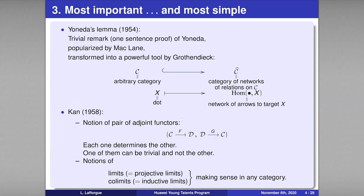The first important thing to say about categories is that in category theory, the most important things are the most simple things. There is the so-called Yoneda lemma, introduced ten years after the invention of categories — just a remark with a one-sentence proof by the Japanese mathematician Yoneda. This remark was popularized by Mac Lane, who understood its importance, and later transformed into a powerful tool by Grothendieck.